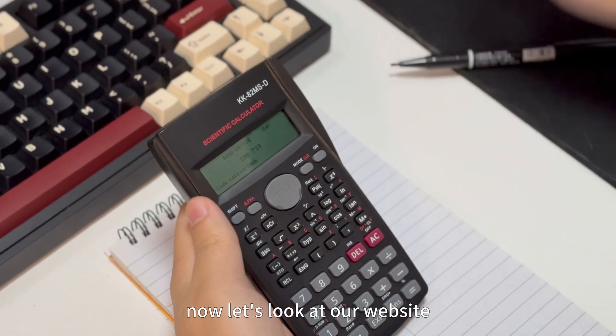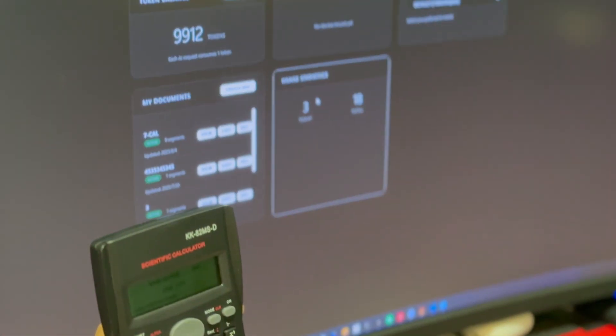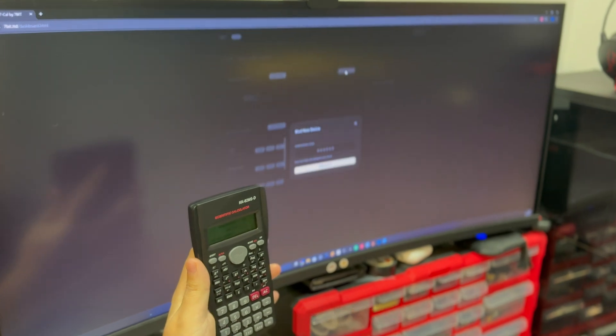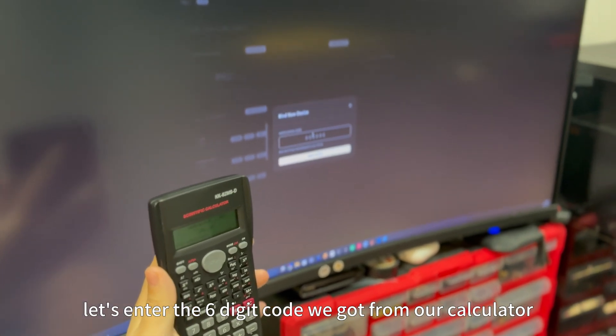Now let's look at our website. You will need an account to log in. Click on binding device. Let's enter the 6-digit code we got from our calculator.